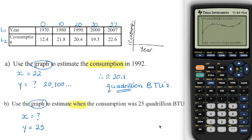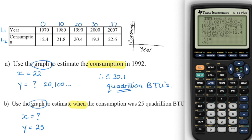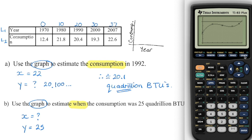The second question wants us to use the graph to estimate when consumption reaches 25 quadrillion BTUs — so I'm looking for a time value. I'm going to go back to Y equals, go down to Y2, and put in Y2 equals 25. Then quickly check your window — we need the Y maximum to be higher than 25. It is in this case, but sometimes you may have to adjust your window. Graph it, and it gives me that horizontal line — I'm looking for where the two curves intersect.